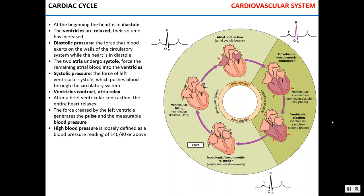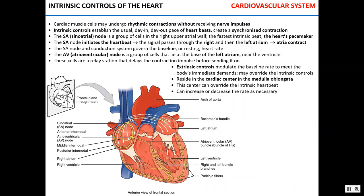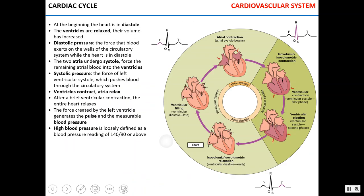Now let's talk about the cardiac cycle. At the beginning of the cardiac cycle, the heart is in diastole — it is completely relaxed. Ventricles are relaxed, and that is when diastolic pressure is measured — the force of blood exerting on the walls of the circulatory system. Then the atria undergo systole, called atrial contraction or atrial systole, which pushes blood from the atria into the ventricles. Then the ventricles start to contract in ventricular systole, which can be divided into two phases. First is isovolumetric contraction, when all valves in the heart are closed and the volume of blood in the ventricles doesn't change.